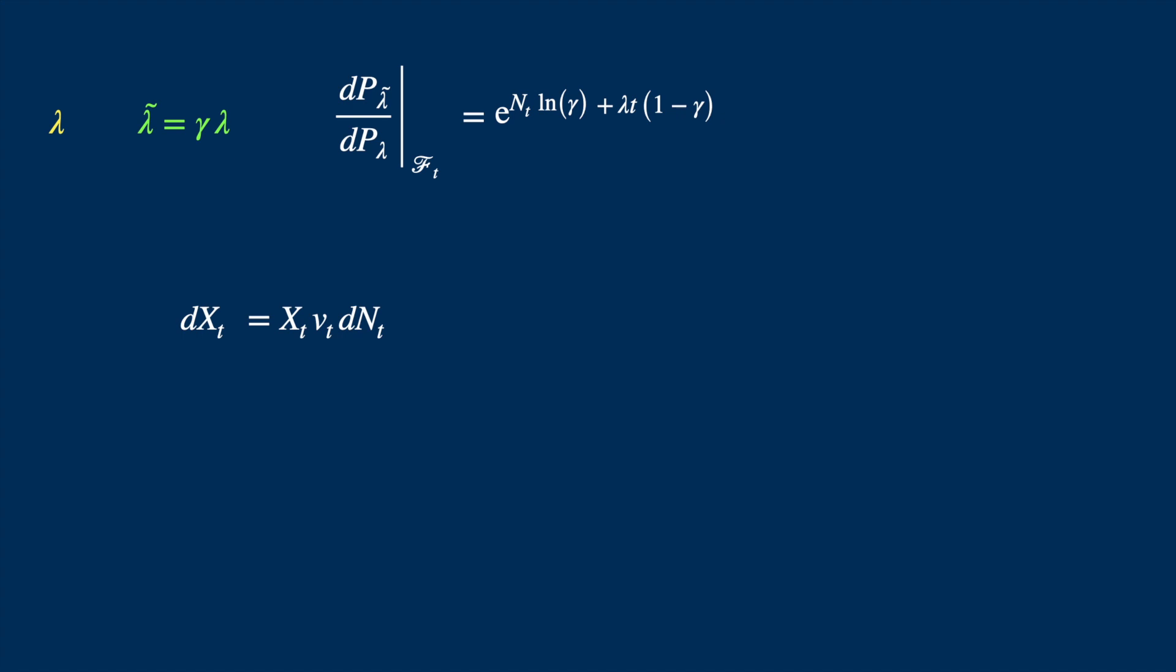Now this process isn't a local martingale. Remember the discussion of the compensated Poisson process, one has to subtract the expected value of the drift to make it a local martingale. But we subtracted this term, so we should add it back. Now in the first two terms, we can factor out x times nu. So we are left with dN minus lambda times dt, and then the last term stays as it is. Now this dN minus lambda times dt is like a local martingale version of dN, so let's represent it by dM.